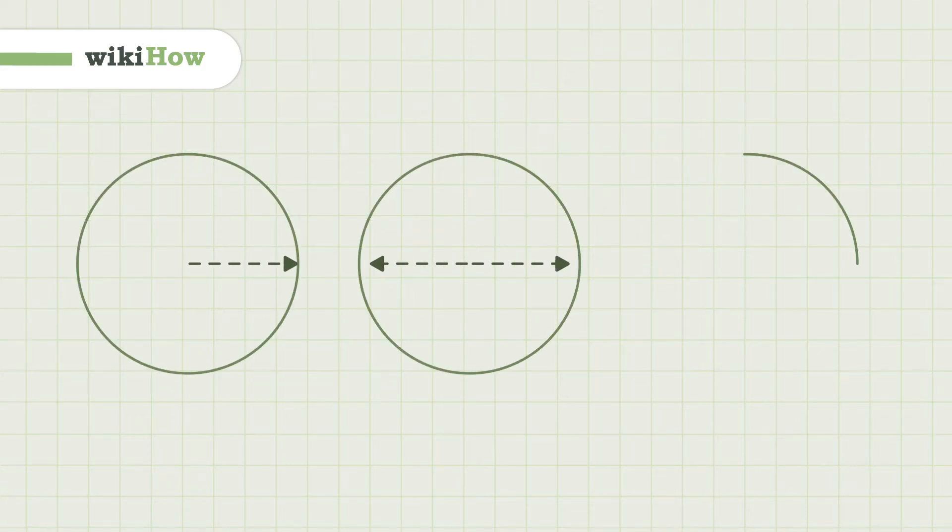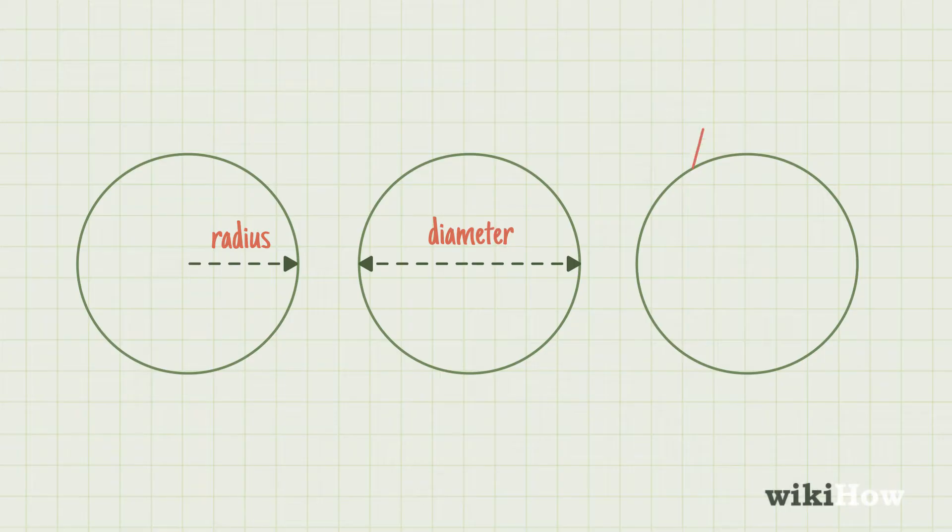You can find the area of a circle using the radius, the diameter, or the circumference.